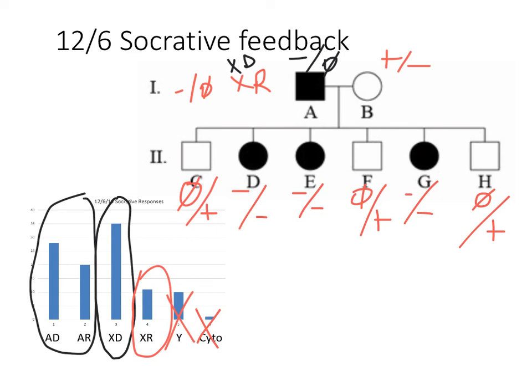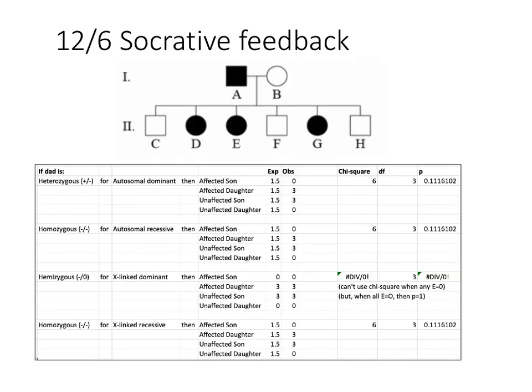Pedigree analysis strategy: start with the easy ones to rule out first. Look for exceptions, not just patterns. Does dad pass it only to sons? If not, it's not Y-linked. Does mom pass it to all her kids and dads never pass it? Cytoplasmic. If neither, then work on whether it's X or autosomal.